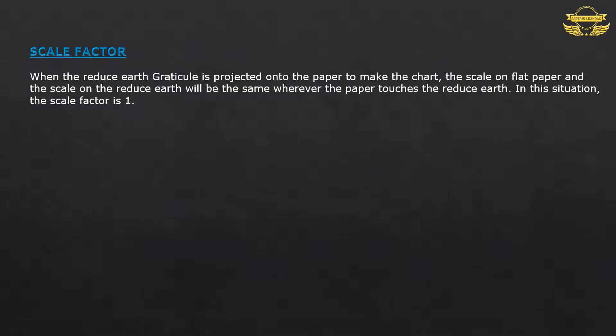Scale Factor: When the reduced earth graticule is projected onto the paper to make the chart, the scale on flat paper and the scale on the reduced earth will be the same wherever the paper touches the reduced earth. In this situation, the scale factor is 1.